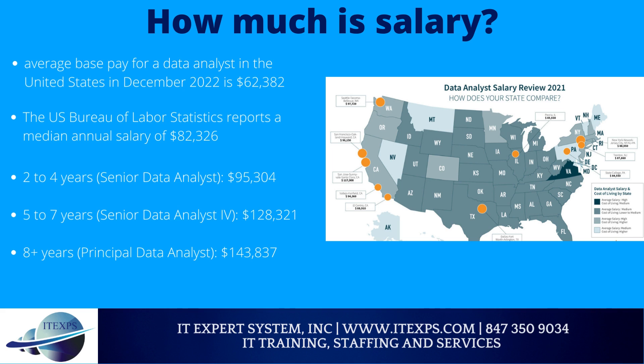How much is the salary? The average base pay for a data analyst in the United States in December 2022 is $62,382. The U.S. Bureau of Labor Statistics reports a median annual salary of $82,326. With two to four years of experience, a senior data analyst can make $95,304. With five to seven years of experience, a senior or principal data analyst can make $143,837.